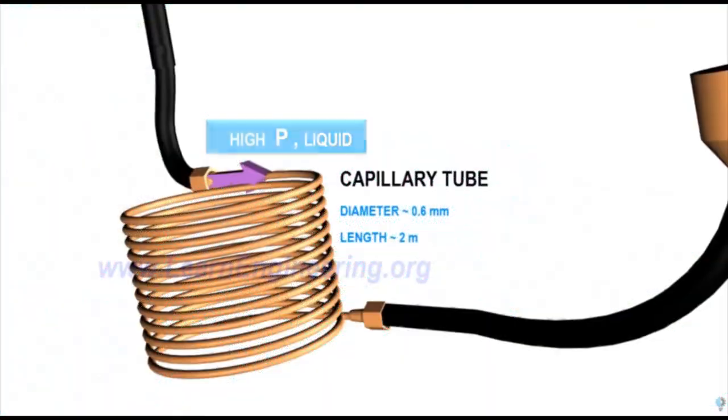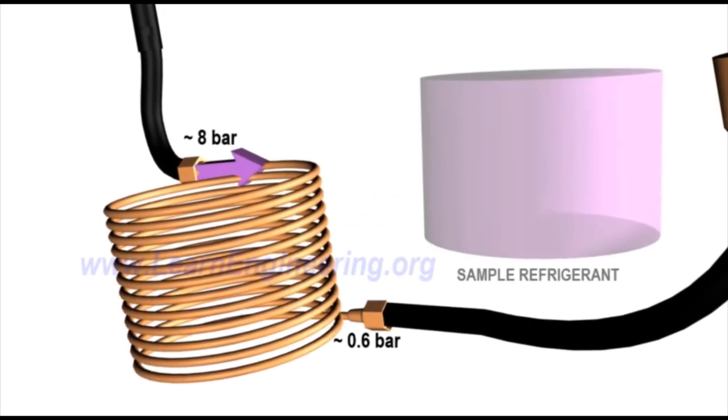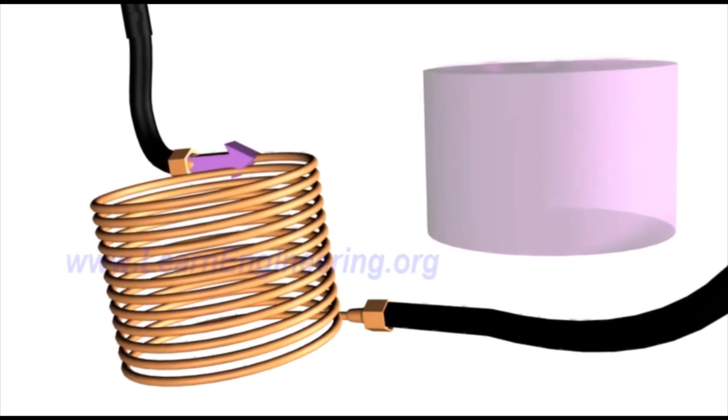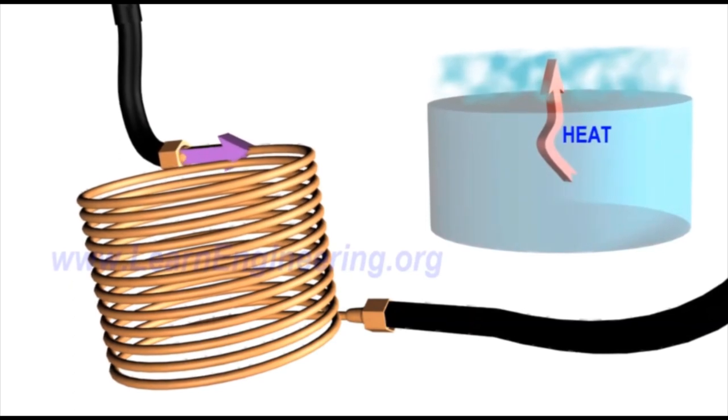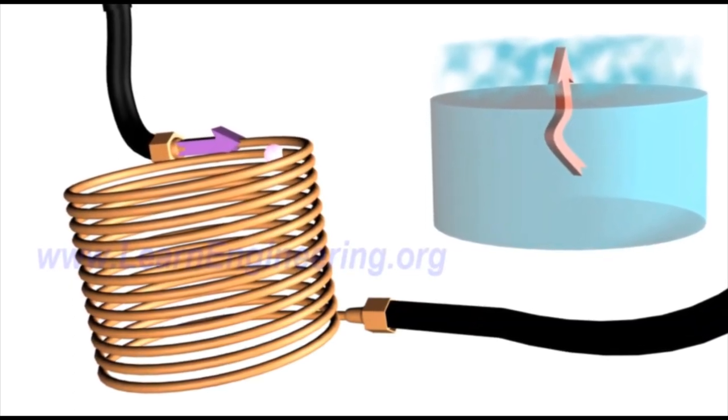Throttling device is an obstruction to the flow which causes tremendous pressure drop. Due to drop in pressure, boiling point of refrigerant comes down and it starts evaporating. Heat required for evaporation comes within the refrigerant so its temperature drops. It's such an interesting thing.